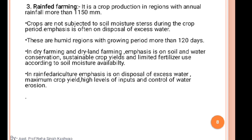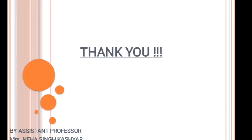So this is all about rainfed agriculture in India. We have three types to remember: dry farming, dryland farming, and rainfed farming. I hope you all got the basic information. In the next lecture, we'll discuss the differences between dryland farming and rainfed farming in more detail. Thank you very much, and till then, be safe, take care.